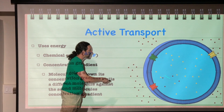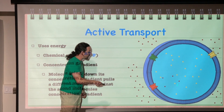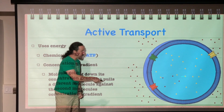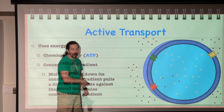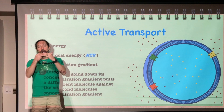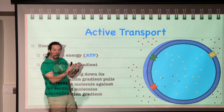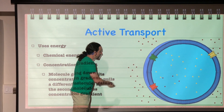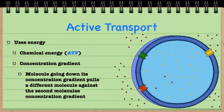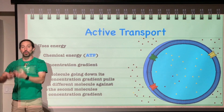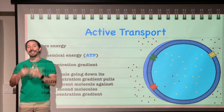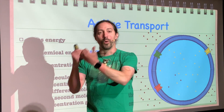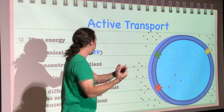The cell can also use a concentration gradient as an energy source through coupled transport. For example, if there is a high concentration of yellow molecules inside the cell and a high concentration of maroon molecules outside, the yellow molecules will naturally move out. That force of the yellow molecules moving down their concentration gradient can be coupled to pull a maroon molecule against its concentration gradient — from low to high concentration — moving along with the yellow molecule.